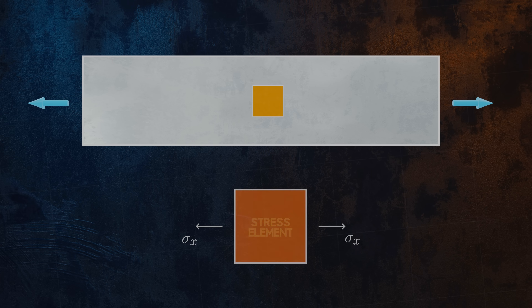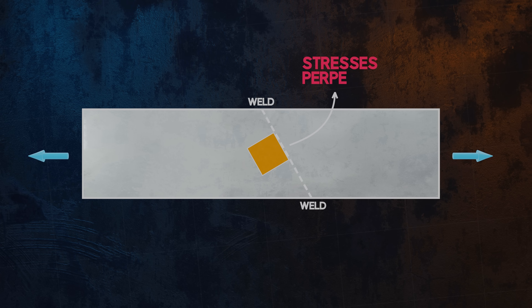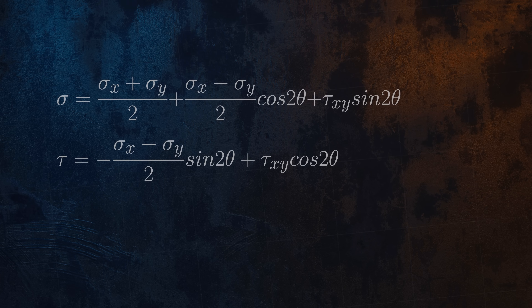But we might want to rotate our stress element to get the stress state for a specific angle. If there was a weld in our structure, for example, we might want to determine the stresses perpendicular to the weld. Depending on how we choose to orient our stress element, we will get different values for the normal and shear stress components. We can calculate what the normal and shear stresses will be as we rotate our stress element by using the stress transformation equations.